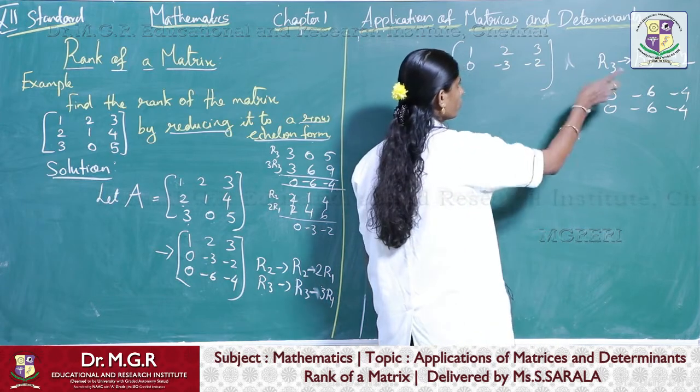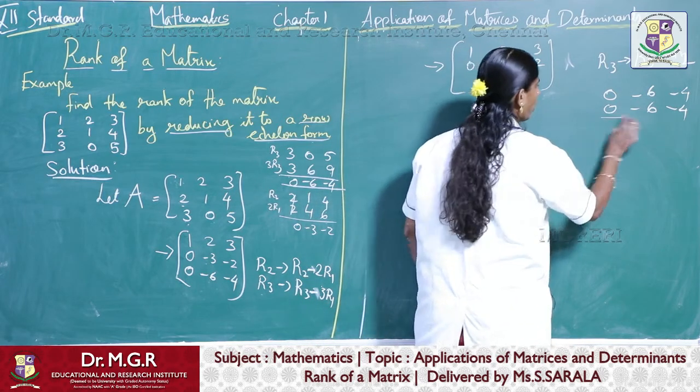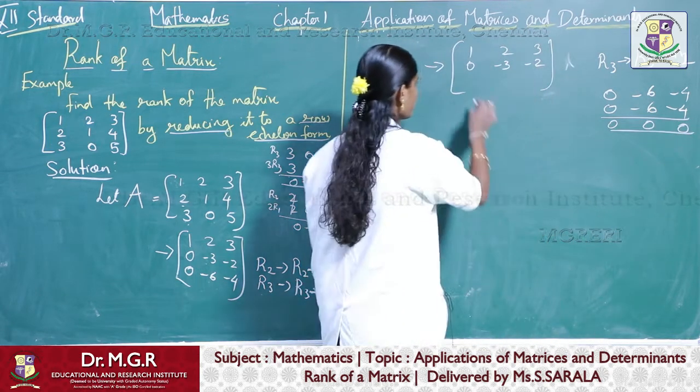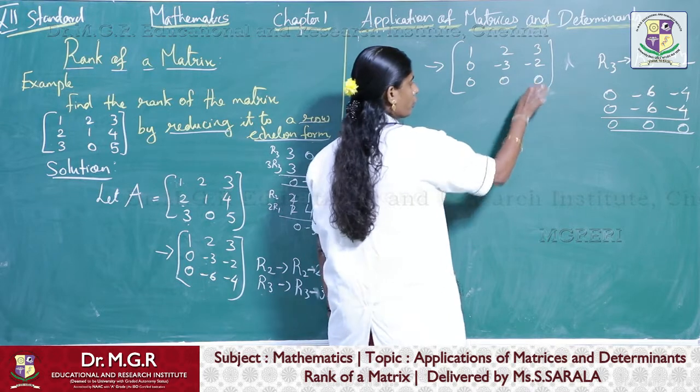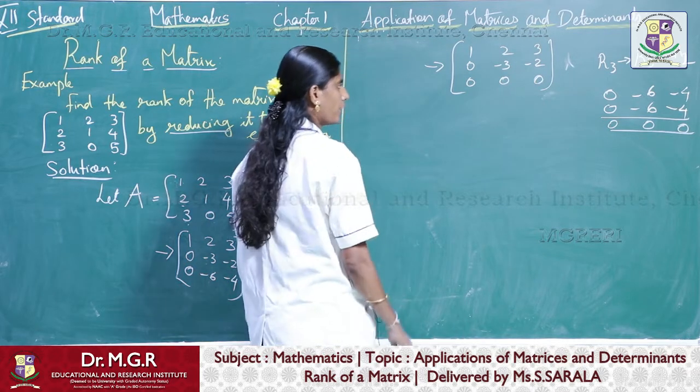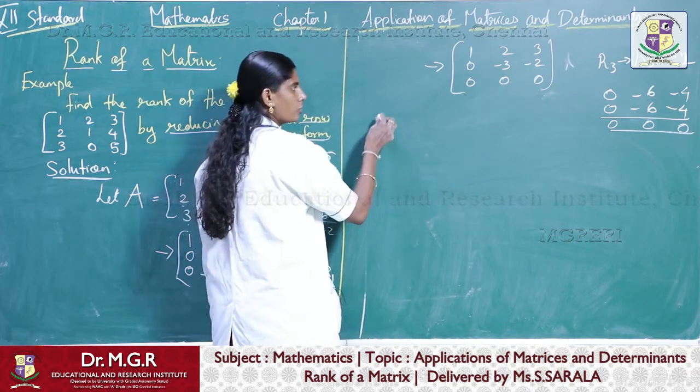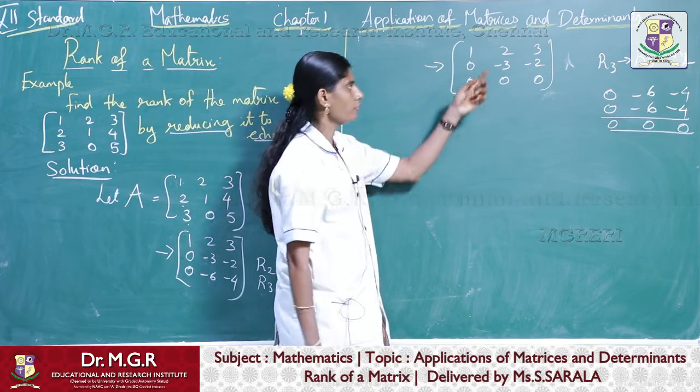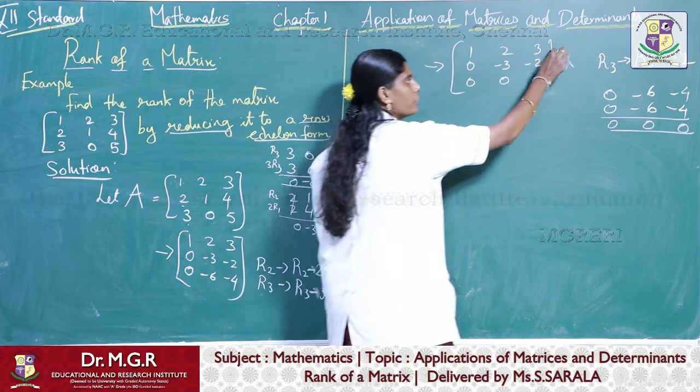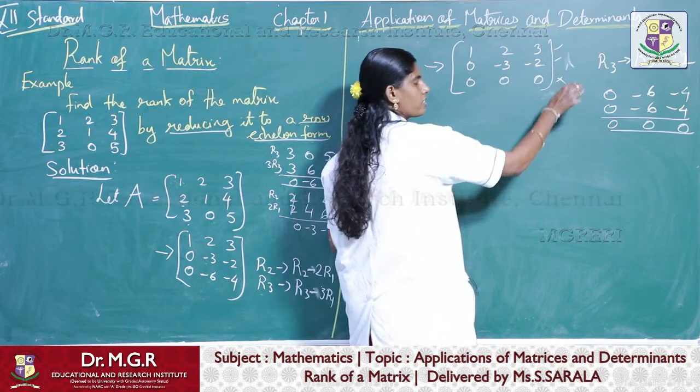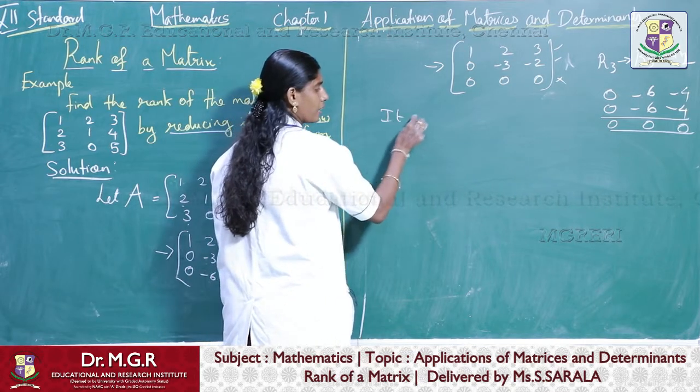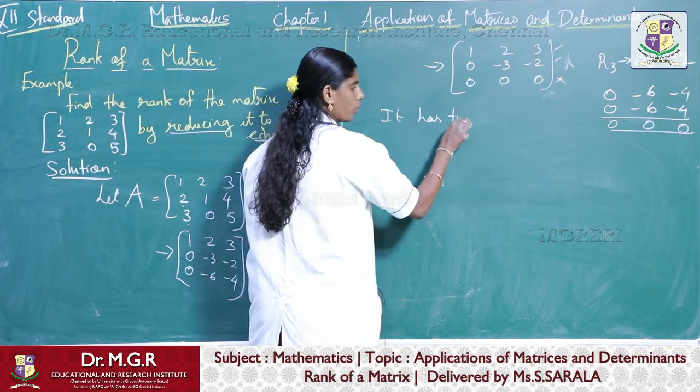If you multiply this one, you will get all the entries are 0. If all the entries are 0, what are you going to write for the rank of the matrix? In the last equivalent matrix, how many non-zero rows are there? First one, second one. Only 2 non-zero rows are there. This is a 0 row. So we are taking the rank as it has 2 non-zero rows.